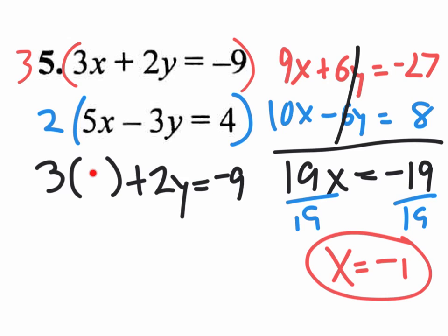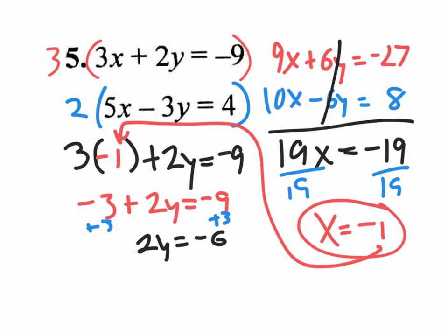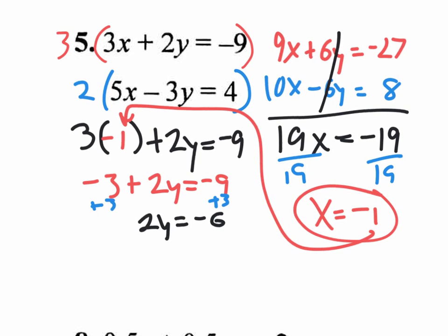There's a negative 1 in there now. So 3 times negative 1, that's negative 3, plus 2Y equals negative 9. And now let's solve this thing by adding 3 to both sides, plus 3, plus 3. You're going to end up with 2Y equals negative 6. Which means that our final answer is going to be Y equals, when you divide both sides by 2, you get Y equals negative 3.